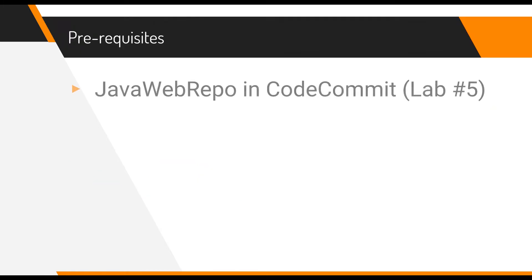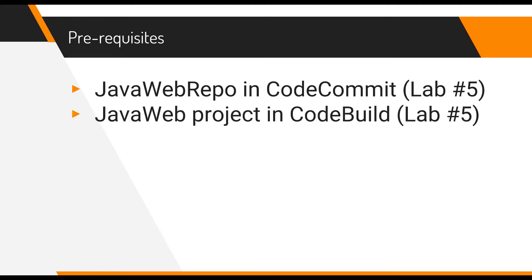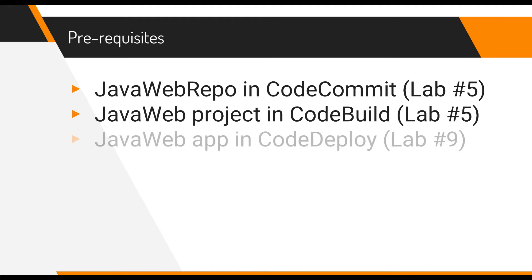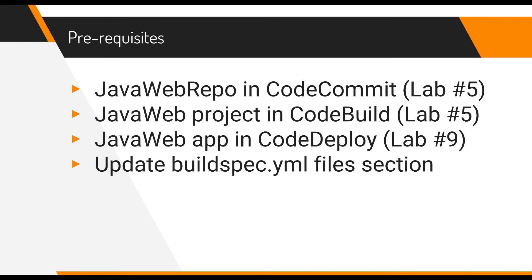For this lab we have some prerequisites. You should have the previous labs created in your account. The first prerequisite is having the Java web repository in your CodeCommit. You should have the Java web project in your CodeBuild — this was created in lab number five. You should have the Java web application created in CodeDeploy — this was in lab number nine, and I would strongly encourage you to go back and review it because what we'll be doing in this lab is automating all of that through CodePipeline.